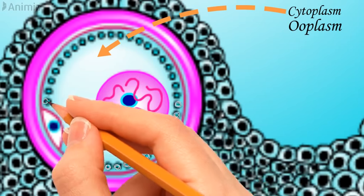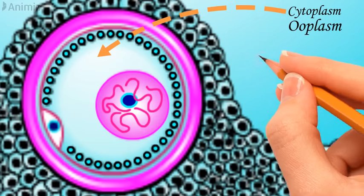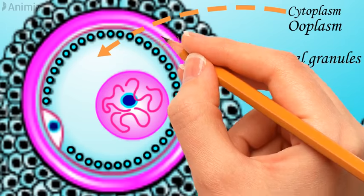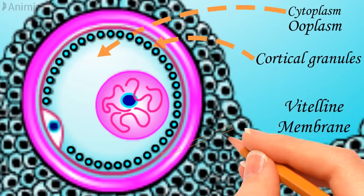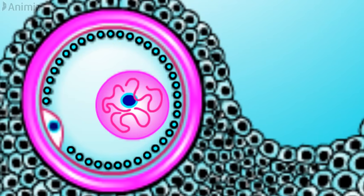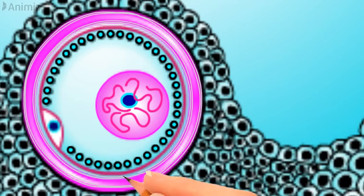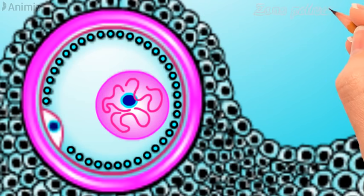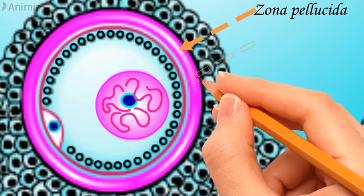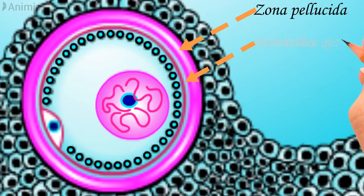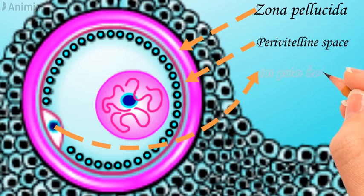At the periphery, the ooplasm is tightly packed with cortical granules that play a crucial role in preventing polyspermy. The oocyte is covered by a cell membrane, otherwise called the vitelline membrane. Just outside the cell membrane you can see a very thick transparent glycoprotein layer called the zona pellucida, which you can appreciate in the picture. This plays a vital role both in fertilization and in implantation. There is also a narrow space between the cell membrane and the zona pellucida, called the perivitelline space, where the first polar body lies.